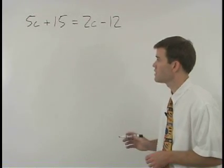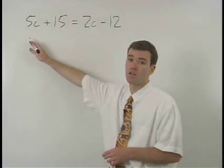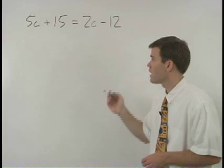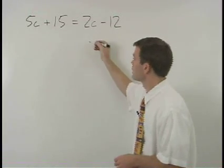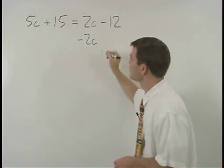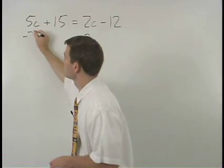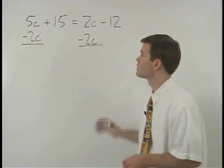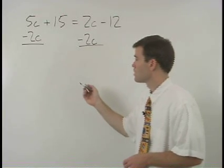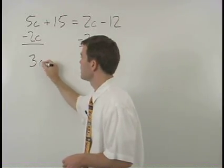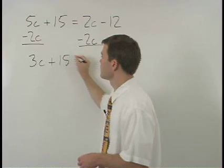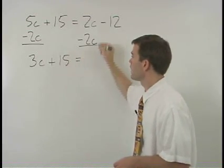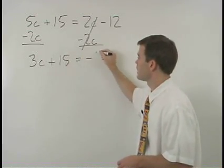So let's put our c's together on the left side of the equation, and we do that by subtracting 2c from both sides. On the left we have 3c plus 15, and on the right we have negative 12.